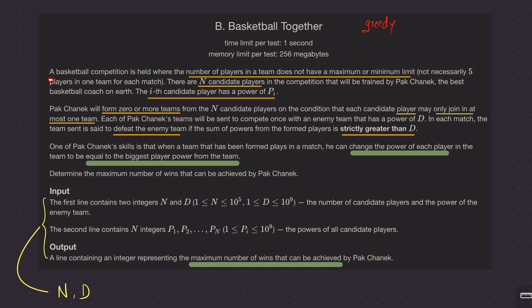There is a basketball competition where the number of players in a team does not have a bound — they can be any value greater than zero. There are N candidate players in the competition, and each one of them has some power given by the array P_i. So P1 is the power of the first candidate, and so on.